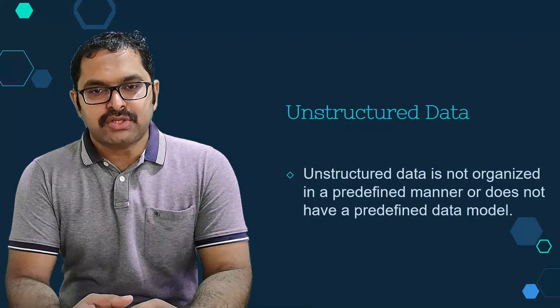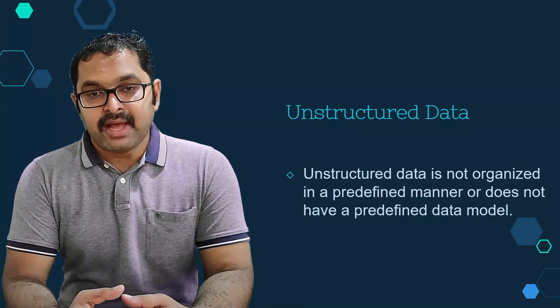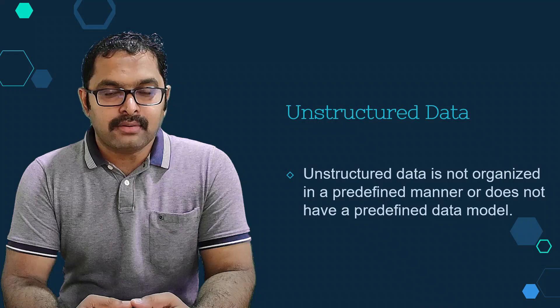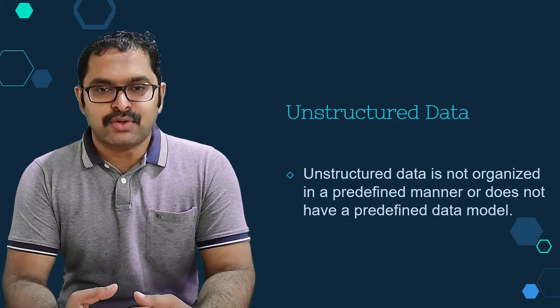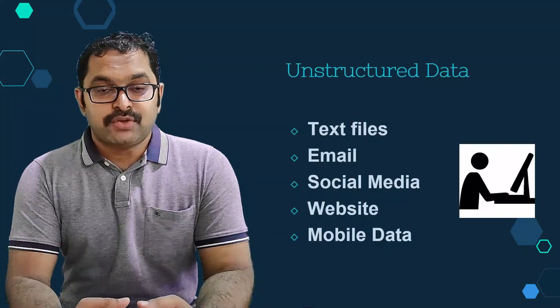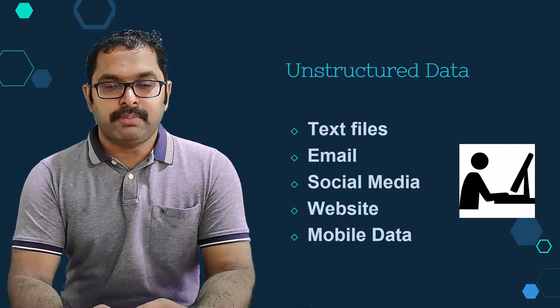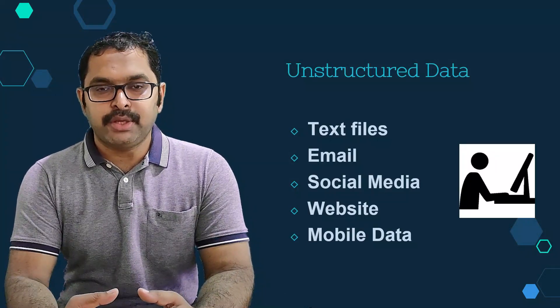Unstructured data is data which is not perfectly organized in a specific format or doesn't have a predefined data model. It comes in a variety of file formats from plenty of sources. Here we can see some human-generated unstructured data: text files, email, social media data, websites, mobile data, all generated by humans.